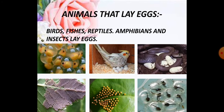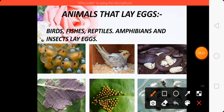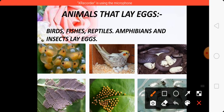Next we will talk about animals that lay eggs. Animals like birds, fish, reptiles, amphibians, and insects lay eggs. Some young ones that come out after hatching look like the parent animal, while some do not look similar at hatching but when they grow, they look similar to their parents.